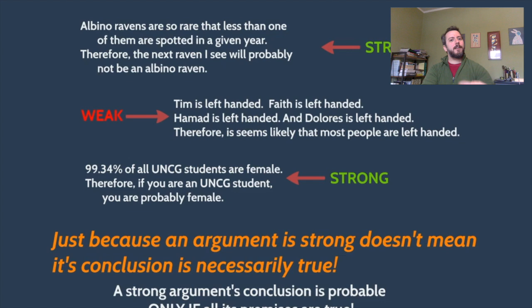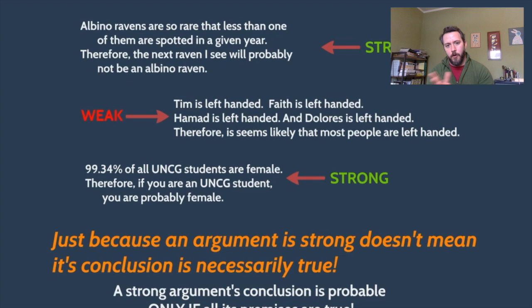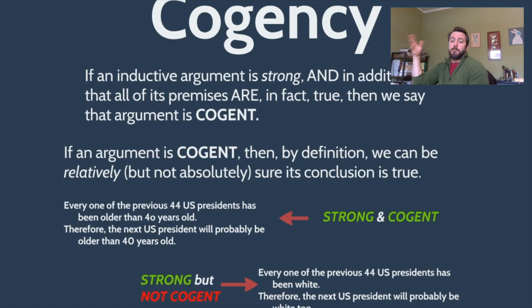A strong argument's conclusion is only probable if all the premises are true. We need another concept — just like validity and soundness, we have strength referring to structure, but we also need a concept that adds: are those premises actually true? For this, we have cogency. Cogency is to inductive arguments as soundness is to deductive arguments — it can't be soundness because soundness requires validity, and no inductive arguments are valid. An inductive argument is cogent if it's strong and all of its premises are in fact true.